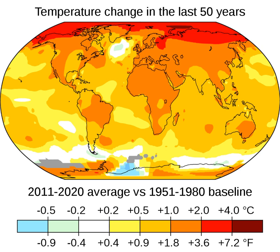On land, temperatures have risen about twice as fast as the global average. Deserts are expanding, while heat waves and wildfires are becoming more common. Increased warming in the Arctic has contributed to melting permafrost, glacial retreat, and sea ice loss. Higher temperatures are also causing more intense storms and other weather extremes. In places such as coral reefs, mountains, and the Arctic, many species are forced to relocate.